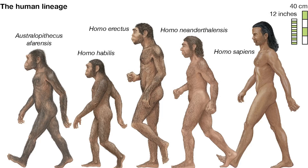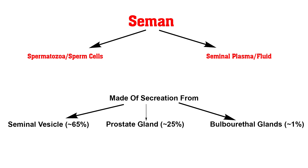In the context of higher organisms such as mammals, semen is defined as the viscous biological fluid produced from the reproductive organ of reproductively mature male members of a species during the act of ejaculation, which usually occurs at the culmination of sexual intercourse or masturbation. Semen consists of two main parts: the spermatozoa or sperm cells, which comprise about 5% of semen, and the seminal plasma or seminal fluid.